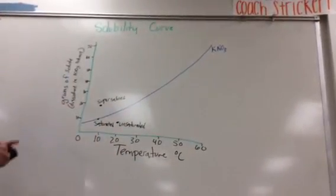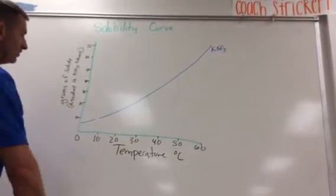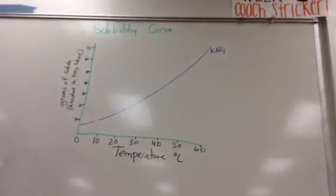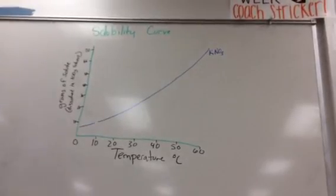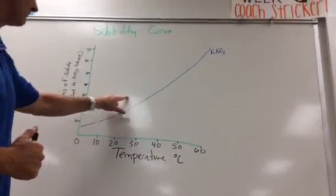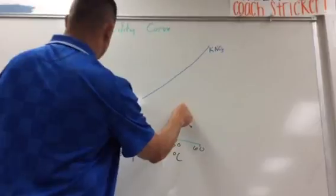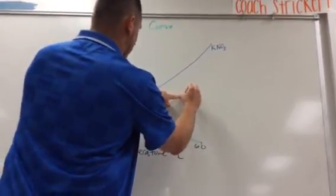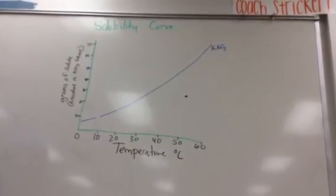So let's do one here. What if I say, what type of solution do you have if you have 30 grams at 50 degrees Celsius? How would I read that? I'd say, okay, I have 30 grams at 50 degrees Celsius. So 50 goes up, 30 goes here, it's a point right there. What type of solution is that? Unsaturated. Why? It's under the line.